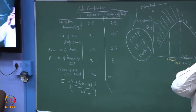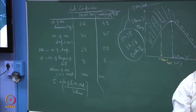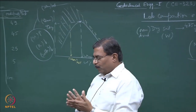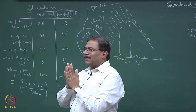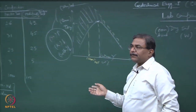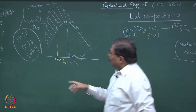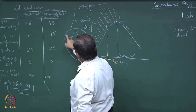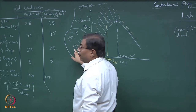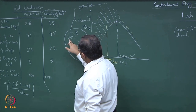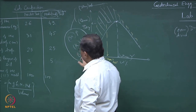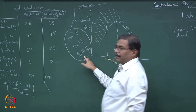Student question: According to the formula, gamma dry equals weight of solids upon total volume. When we add water the volume increases but the weight of soil does not increase. Instructor: Just hold on for 5 minutes and I will clear all your doubts. Another student asks: What are those terms S, K, and that? Instructor: Shear strength of the compacted soil mass, hydraulic conductivity of the compacted soil mass, and settlement of the soils which are compacted.